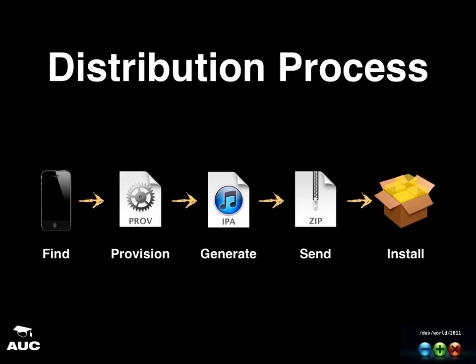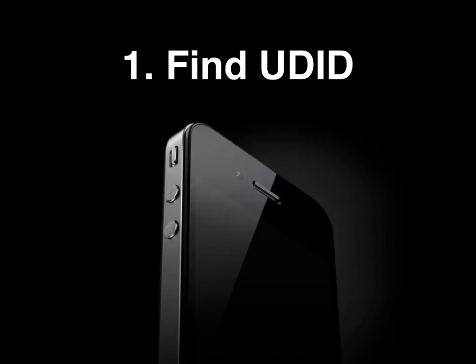It's frustrating for both me and the users as well. My job today is to ease the pain and make this distribution process as easy and fast as I can. So let's start from the beginning. The first step is finding the UDID for your iOS devices. If you don't know what a UDID is, it's a unique device identification — a 40-character string. And there are two scenarios in this process.